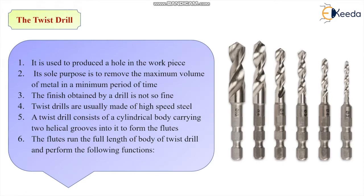These twist drills are usually made by high-speed steels. The twist drill consists of a cylindrical body carrying two helical grooves into it to form the flutes. Basically drills carry these two helical grooves to form a flute. The flutes run the full length of the body of the twist drill and perform the following functions. What are the functions that can be done by the flutes?